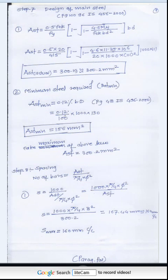Step 6: Design of main steel. Using the formula from page 96 of IS 456-2000: Ast = 0.5 × fck/fy × [1 - √(1 - 4.6Mu / (fck × b × d²))] × b × d. Remember to use proper brackets in the calculator to avoid errors. Substituting all values, we get Ast = 300.19 mm², taken as 300.2 mm².